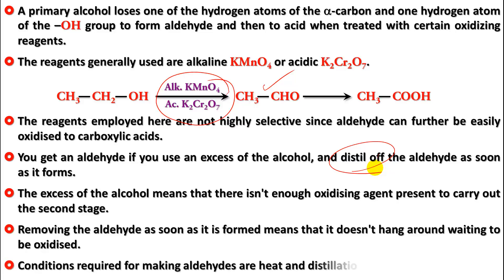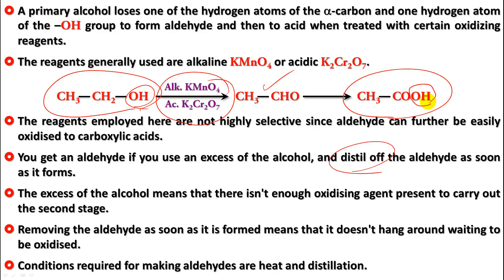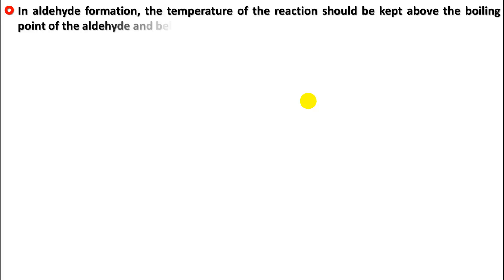The excess alcohol means there isn't enough oxidizing agent to carry out the second stage. Distilling the aldehyde as soon as it forms ensures it doesn't remain in the reaction mixture where it could be further oxidized. The conditions for making aldehyde are heat and simultaneous distillation. We must also ensure the reaction temperature lies between the boiling point of the alcohol and the acid — both have an OH group enabling hydrogen bonding, so their boiling points are higher than that of the aldehyde. The temperature should be kept just above the boiling point of the aldehyde so it boils off the moment it forms.